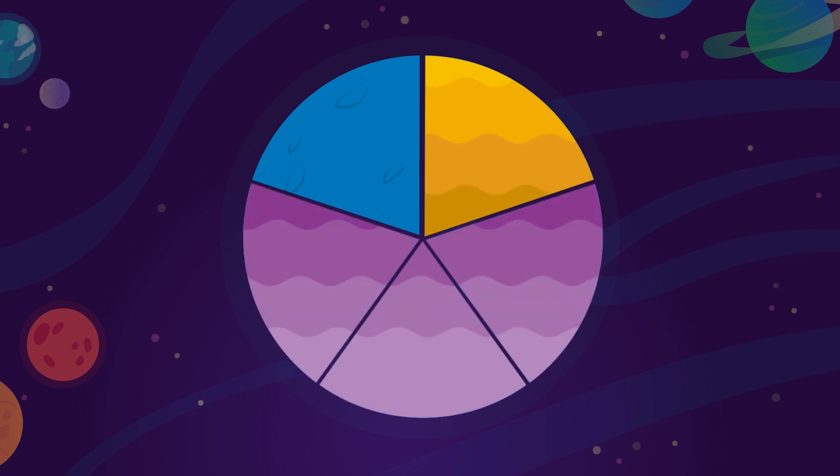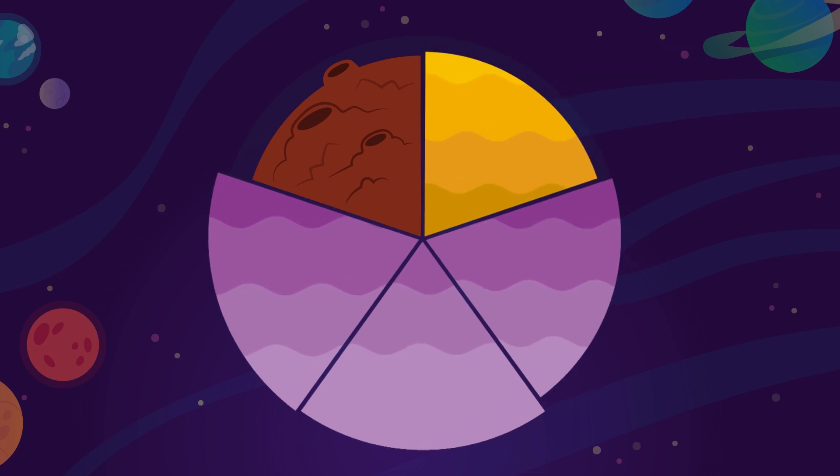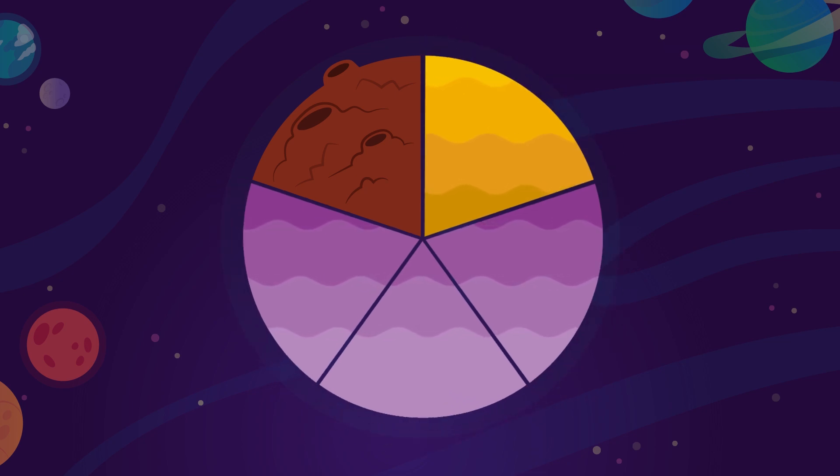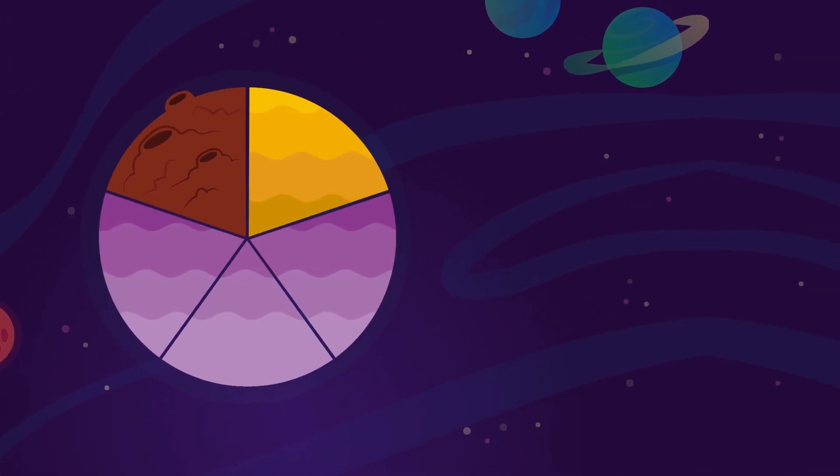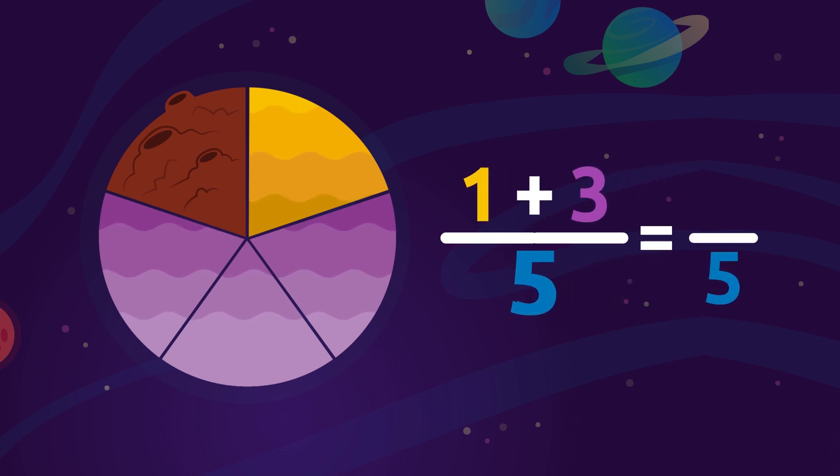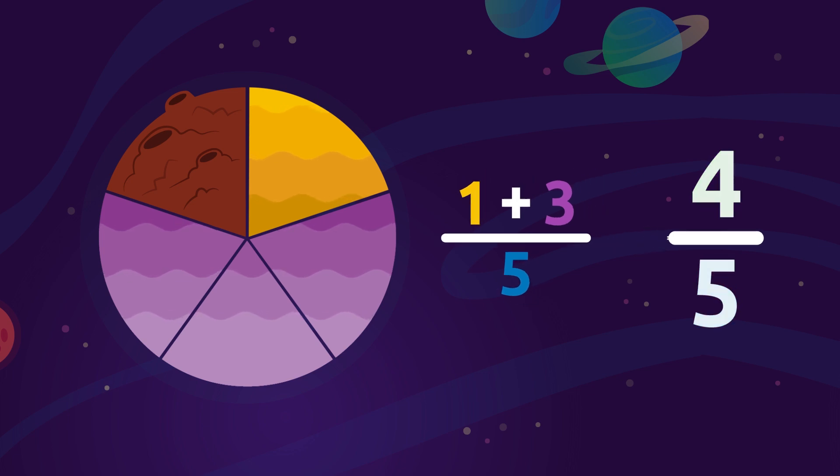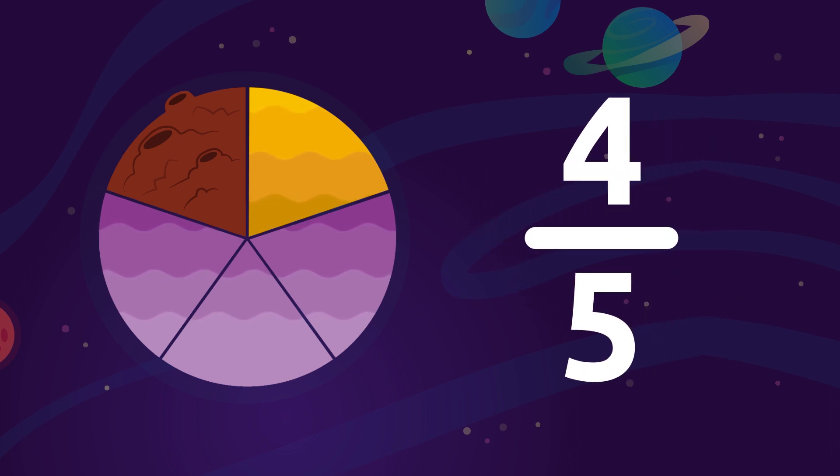How much of the land on planet Learnython is covered with water? To find out we'll need to add the fractions 1 over 5 plus 3 over 5. First, in the result we'll leave the common denominator, and then we'll add the numerators 1 plus 3 which equals 4. The result will be that four fifths of the land of the planet are covered with water.